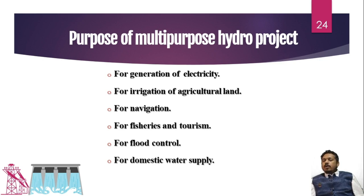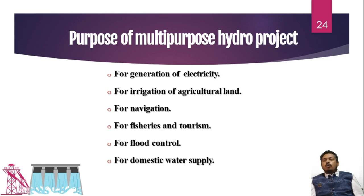Other purposes include navigation, fisheries, and tourism, which are very important reasons. Flood control is another — some rivers carry a huge amount of water in the rainy season and are literally dry in summer. To avoid flooding, we install dams. Lastly, domestic water supply for fulfilling the water demand of the local population is also an important purpose.